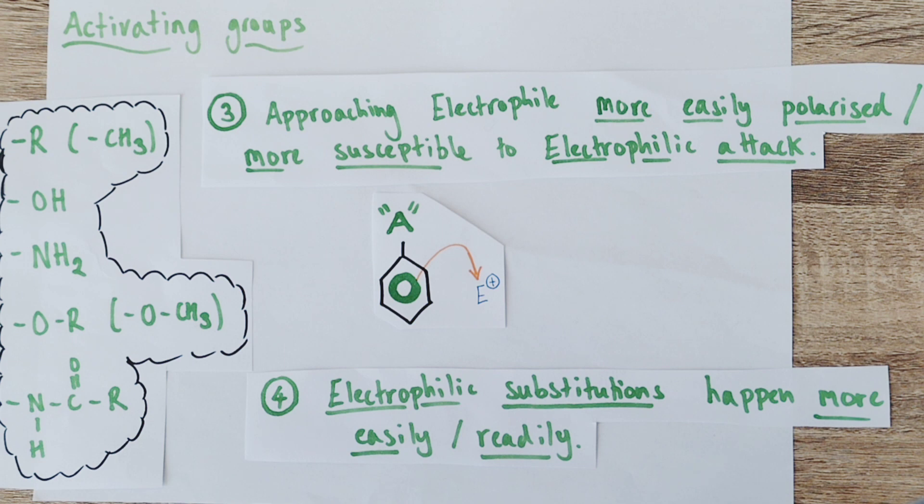If the electrophile approaching is simply a molecule, it might be more easily polarized. That is, the electron density in the ring will push electrons within the bonds of that molecule to one side, creating a delta positive. That delta positive is the electrophilic region of that molecule, and then might go on to attack the benzene ring directly.